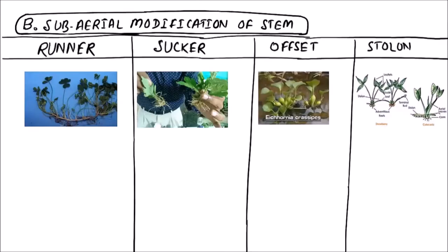Welcome to Studio Biology. In this video, we are going to discuss the sub-aerial modifications of stem. These are Runner, Sucker, Offset, and Stolon.